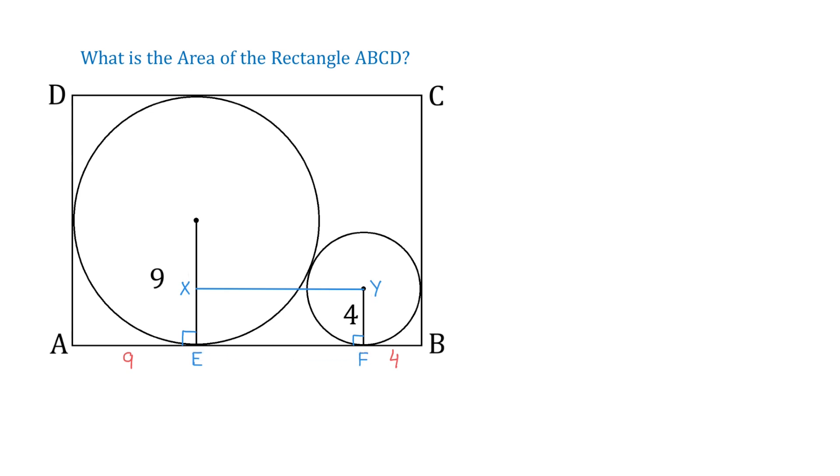So, if we could find XY, then we will know what EF is. Now, to find XY, we will connect the centers of the circles, and let this point be point Z. And now, we have a right triangle XYZ.